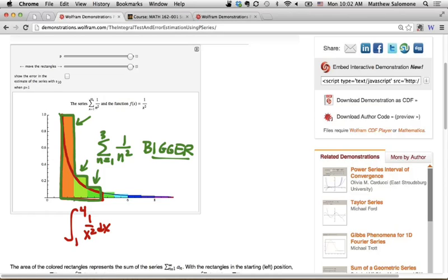So that's the first observation that the sum n equals 1 to 3 is bigger than the integral x equals 1 to 4.